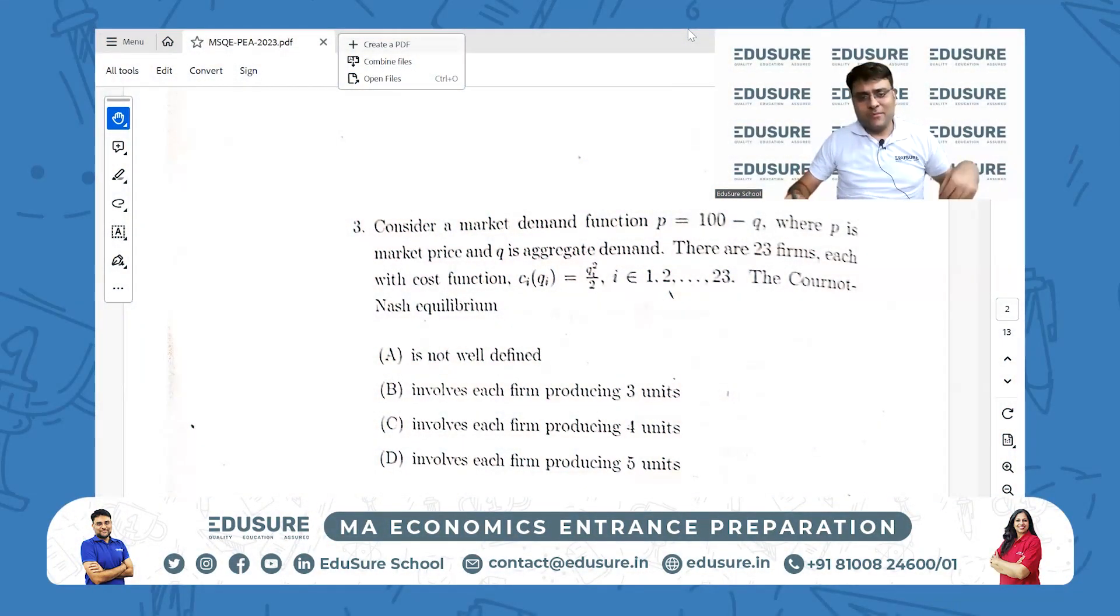This is ISI 2023 PA question number 3. Consider a market demand function p = 100 - q, where p is the market price and q is the aggregate demand. There are 23 firms, and each firm has a cost function of qi squared by 2. The Cournot Nash equilibrium is what? Let's go to the whiteboard and solve it.